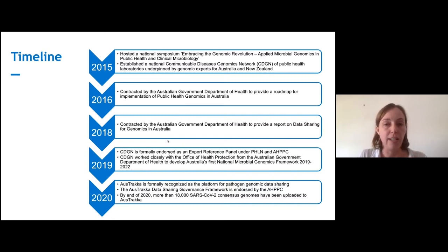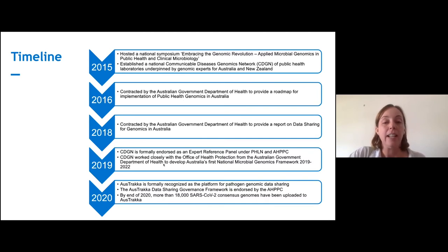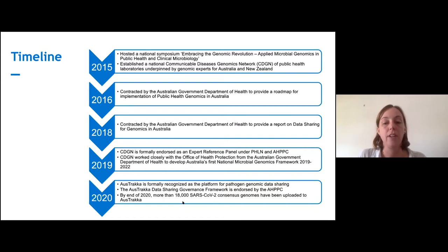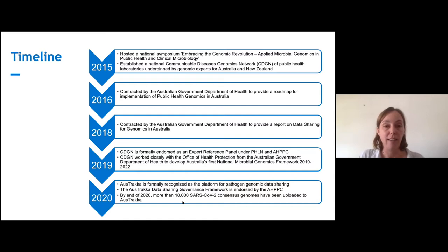In 2019 everything launched. Then in 2020, SARS-CoV-2 arrived in Australia and everything started to move pretty quickly. OzTracker was formally recognised as a platform for pathogen genomic data sharing. A data sharing governance framework was established. By the end of last year, we had more than 18,000 SARS-CoV-2 genomes uploaded to OzTracker. Pretty much all of the development work happened last year — the actual on-the-ground platform development really started in March and April.